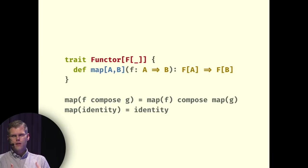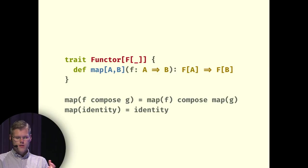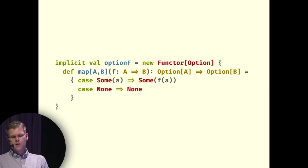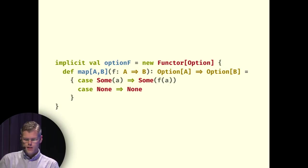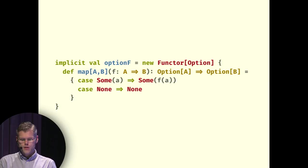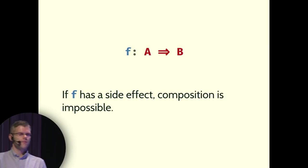An endo-functor — 'endo' meaning within — maps a category to itself. We're particularly interested in endo-functors in the Scala category, the category of Scala types and functions. Such a functor takes a type T and constructs the type F[T]. On the arrows, as seen in the signature of the map method, it takes a function from A to B and constructs a function from F[A] to F[B], preserving composition. An example of a functor in Scala is Option. When we're talking about functions, we're really talking about pure functions — compositionality really breaks down when a function has side effects. We use functors to model effects in a compositional way.